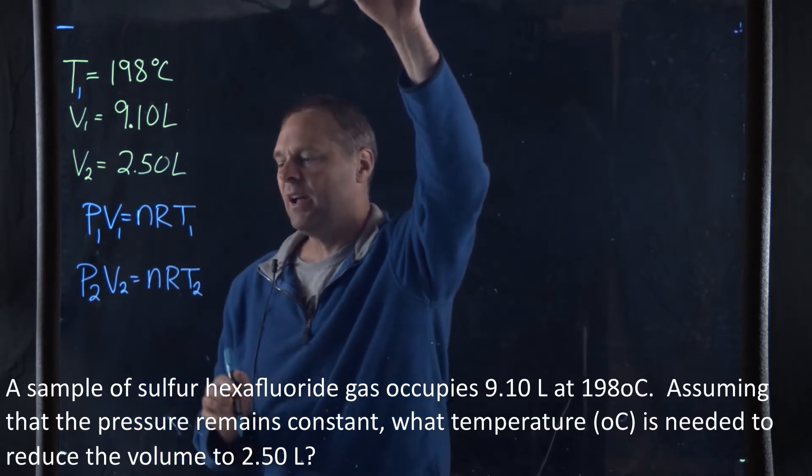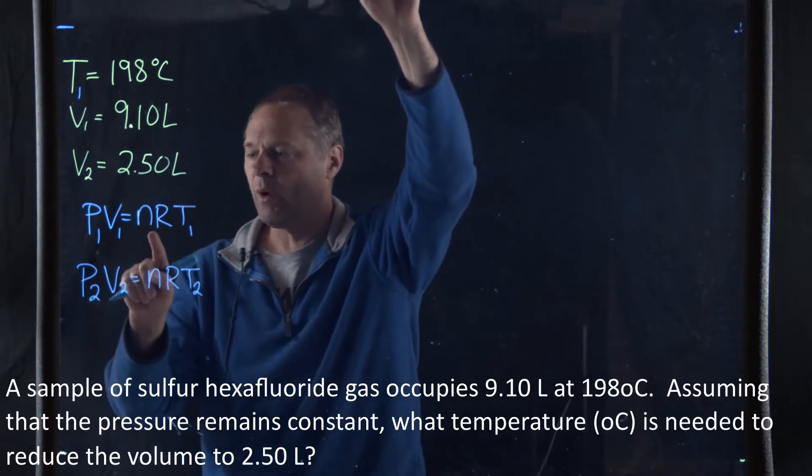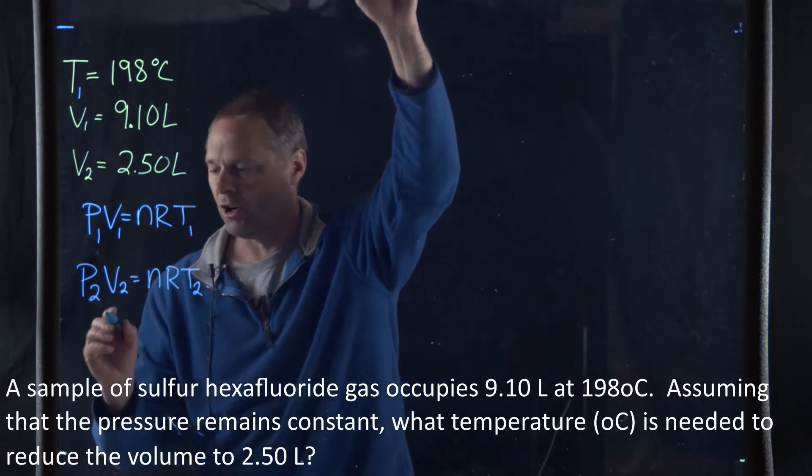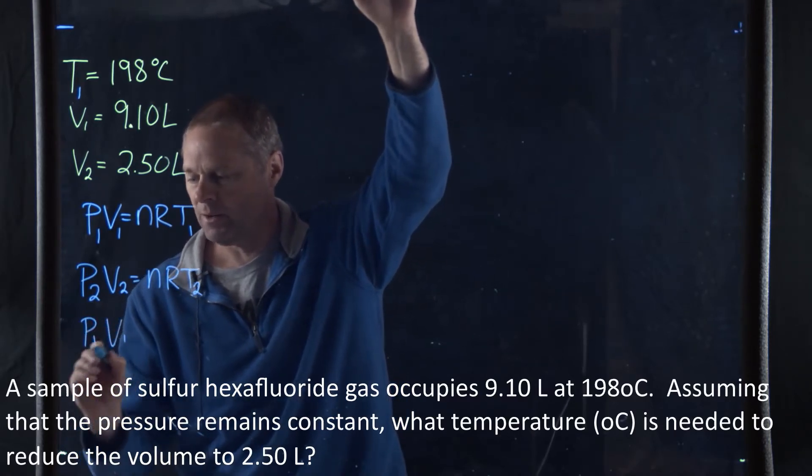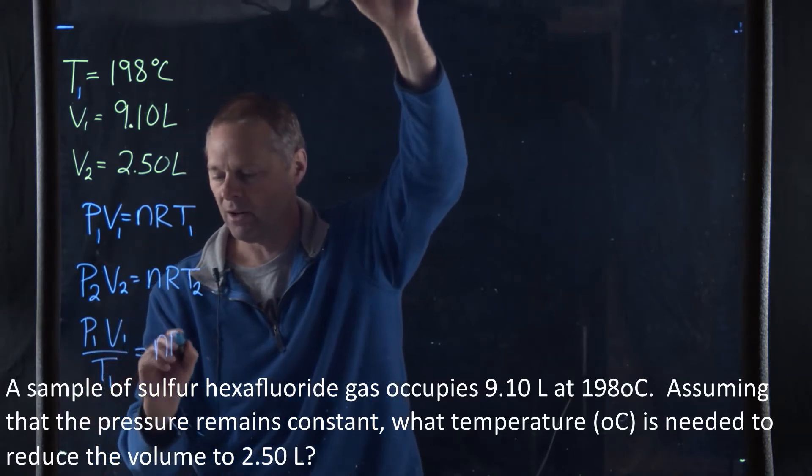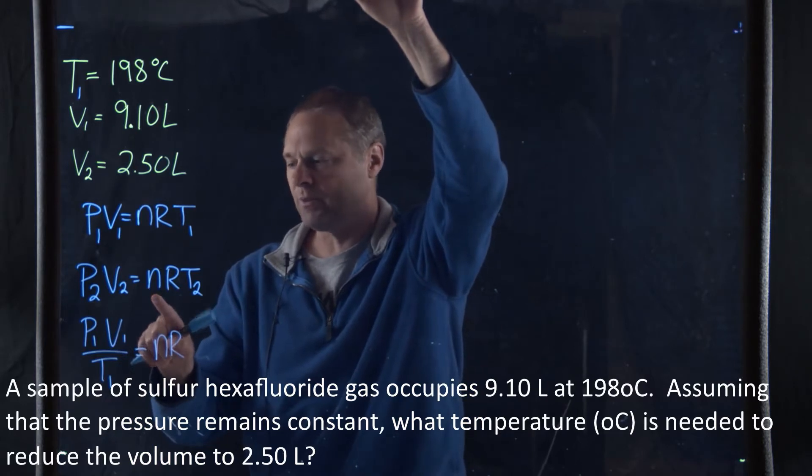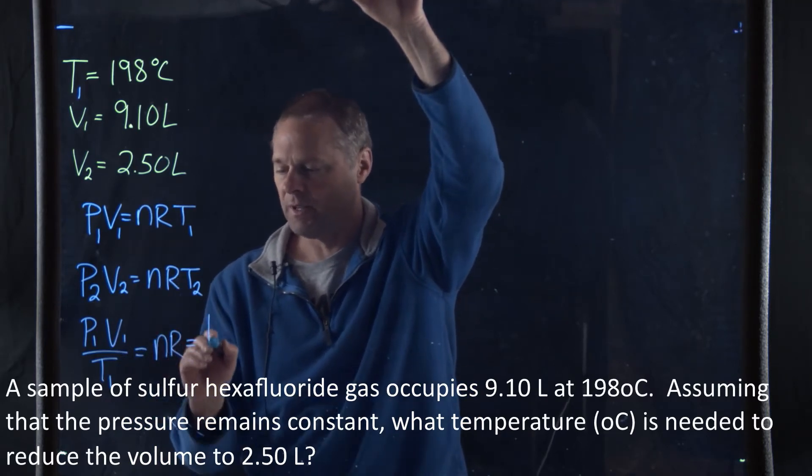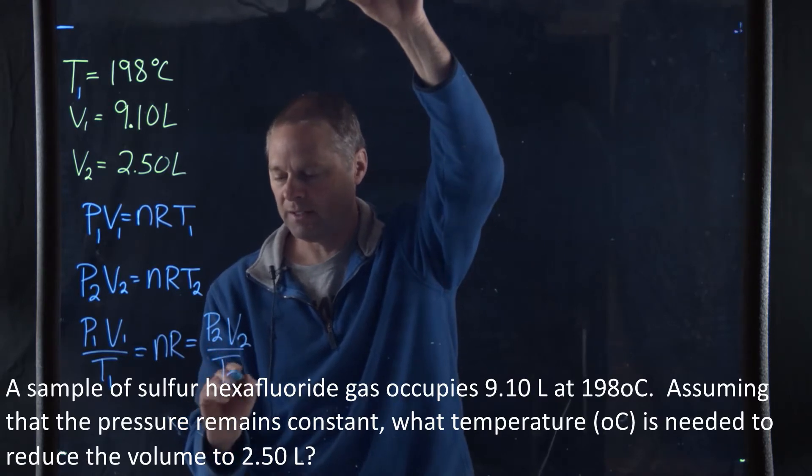Now that we've done this, we can write the equation in terms of nR. So what we get is P1V1 all over T1 is equal to nR. Likewise, we can write this equation in terms of nR, and that's going to be P2V2 all upon T2.